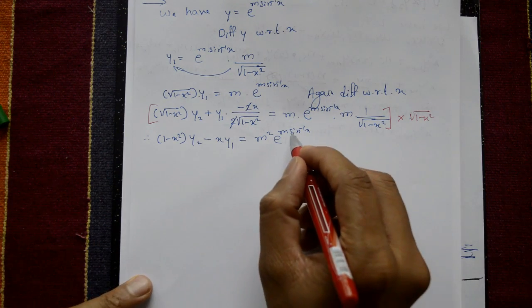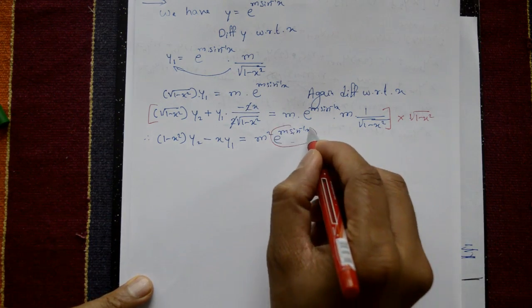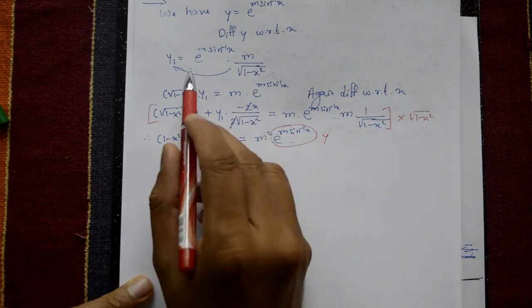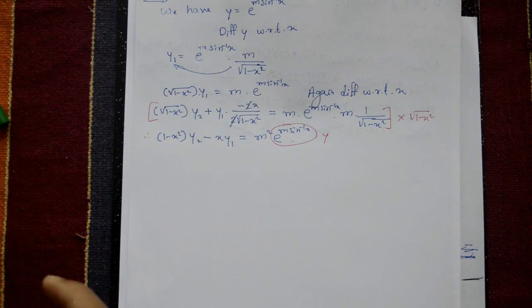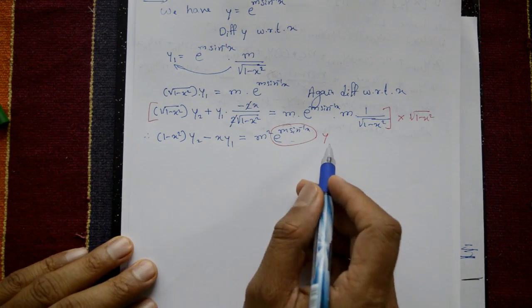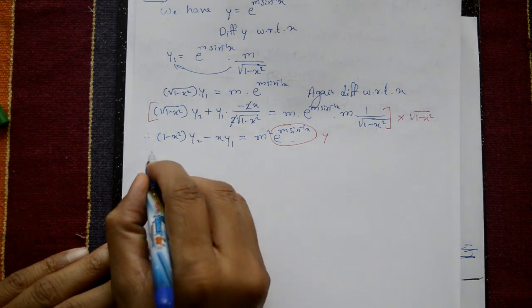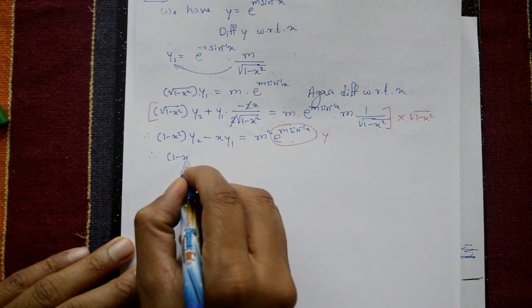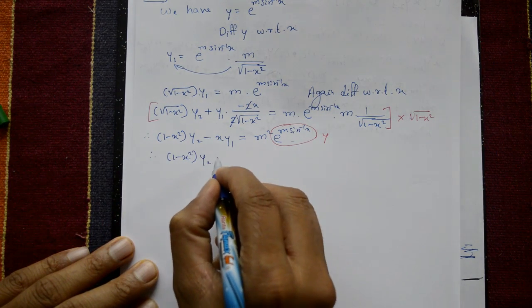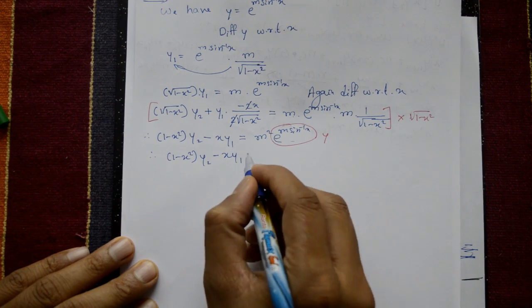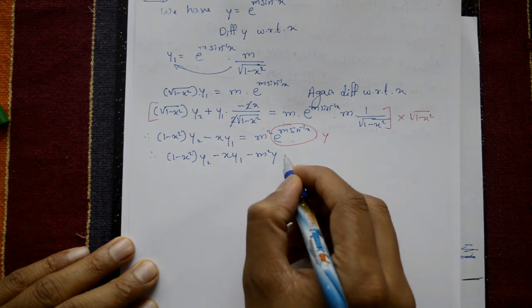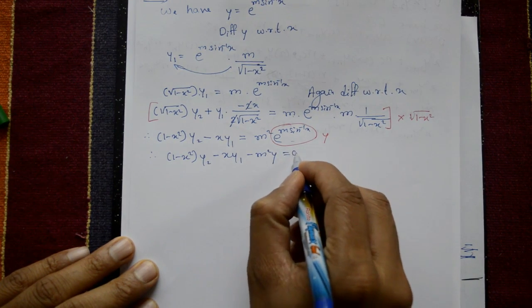But this part is given y. So, m square · y, shift to left hand side: 1 minus x square · y2 minus x·y1 minus m square · y equal to 0.